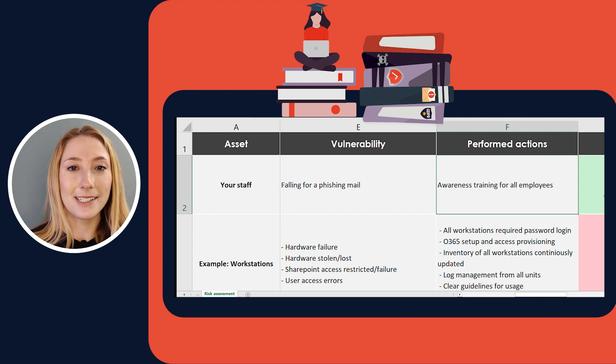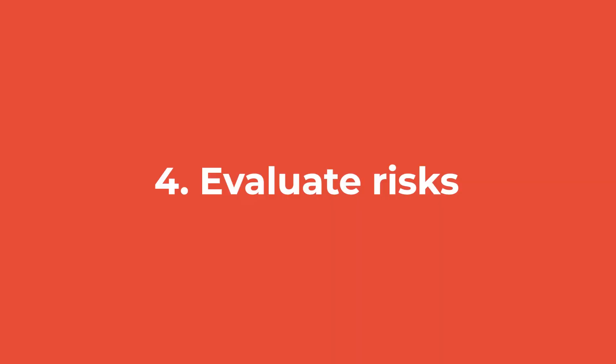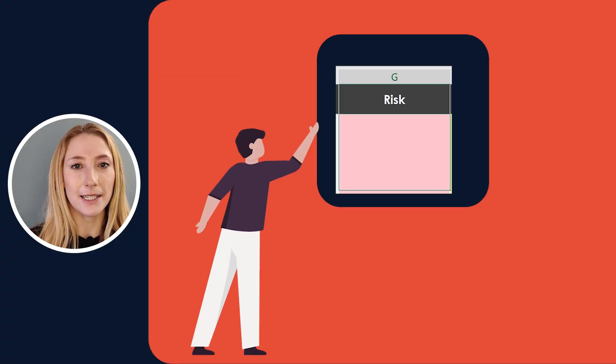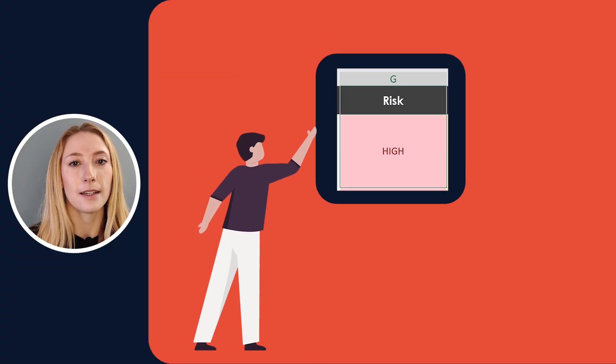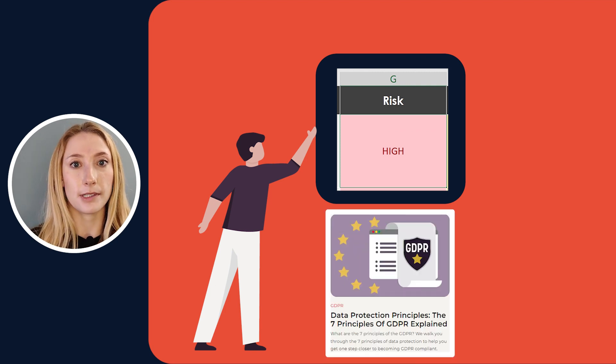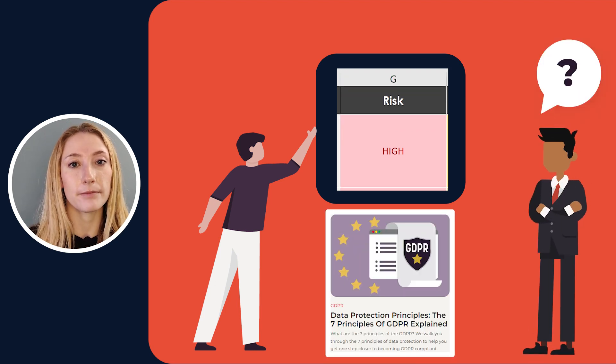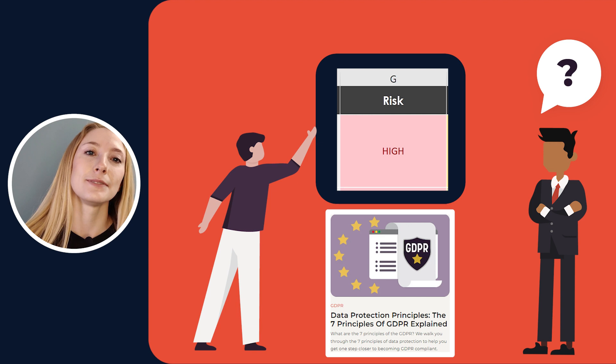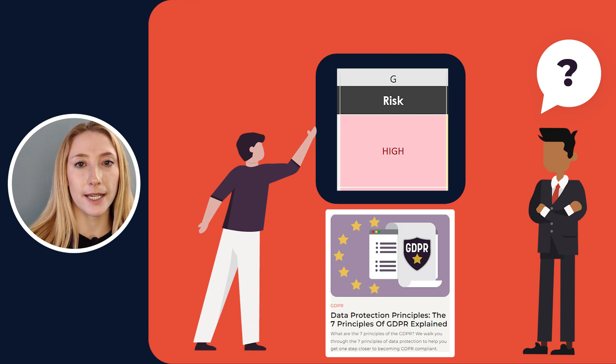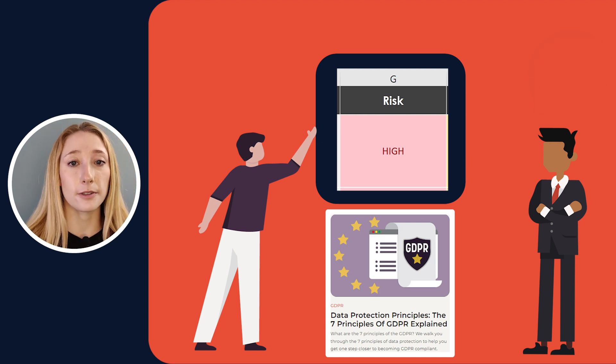Now let's move on to step four. After writing about the threats, it should now be easier for you to assess how big the consequences would be if they were to happen. This is quite subjective, of course, so you should probably discuss it with a colleague. Perhaps your marketing team would put a high consequence on something happening to one of their blog posts, but your IT department might see it a different way. It's important to get a lot of different perspectives and align across your whole team.